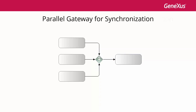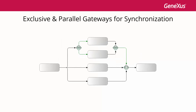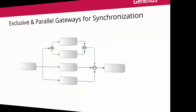However, in some cases an exclusive gateway is required for synchronization. In this example, if the exclusive gateway was not used to synchronize the result of a previous gateway, the parallel gateway would have four input sequence connectors. However, only three of the four flow sequences could pass at a time because of the exclusive gateway at the forking. Therefore, the process would get stuck at that parallel gateway.